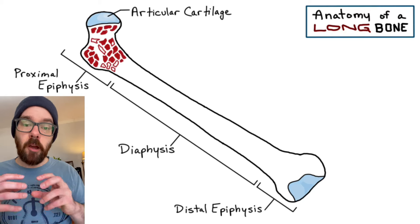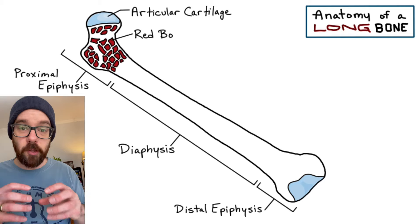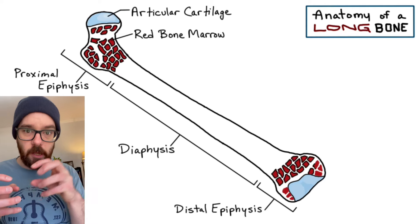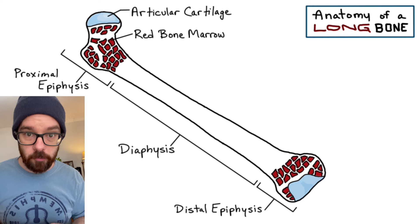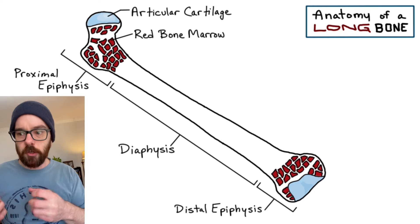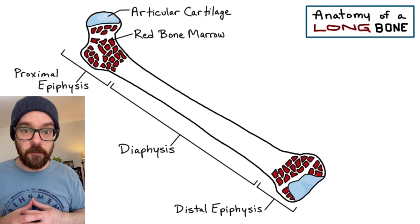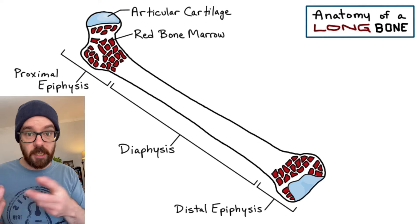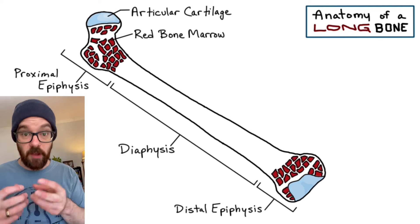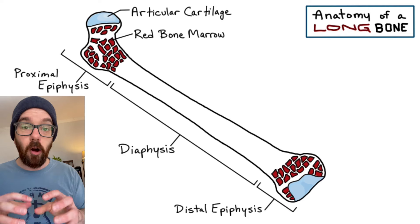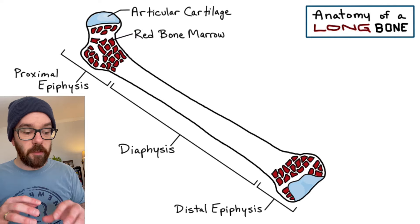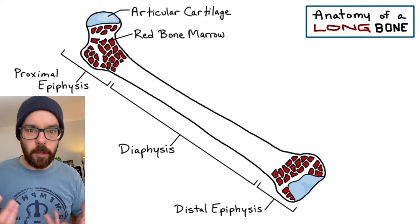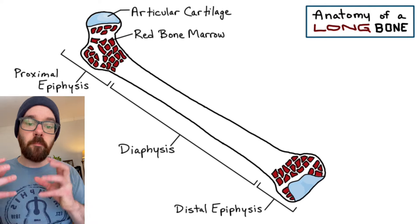Up next we have red bone marrow. If you look at the epiphyses, it looks like spots, but it's really more like a sponge — the inside of the epiphyses is a sponge-like area, and all the holes of the sponge are filled with red bone marrow. Our bones are in charge of making all of our blood cells: red blood cells, which carry oxygen and carbon dioxide, and white blood cells, which help fight off pathogens, bacteria, and viruses — all made in the red bone marrow.